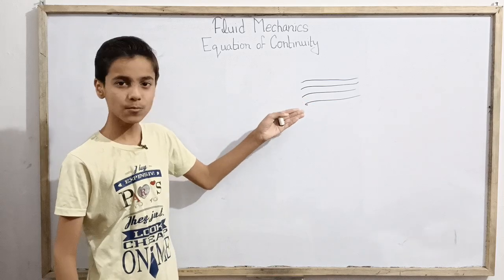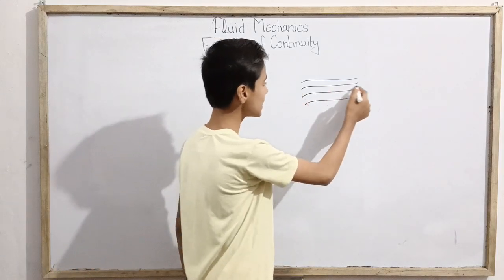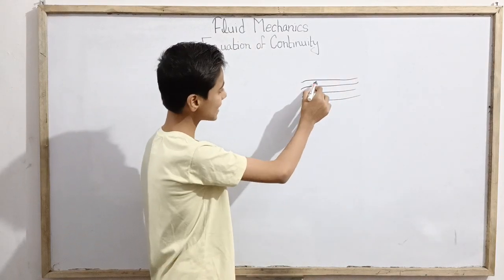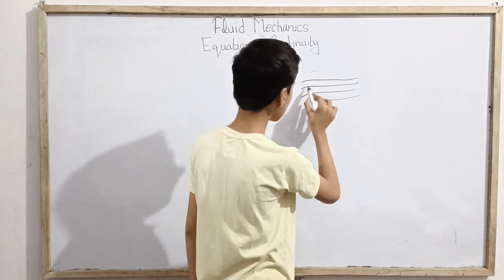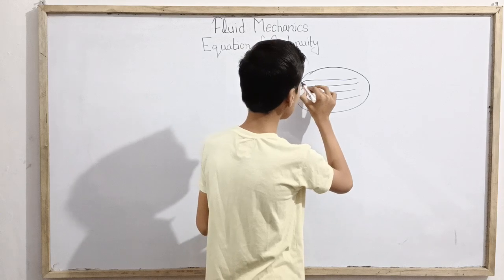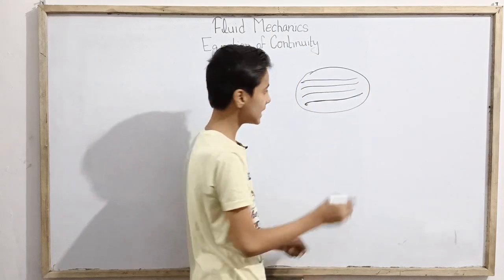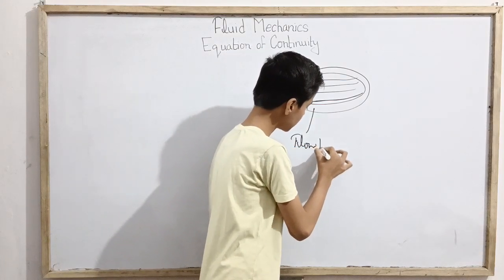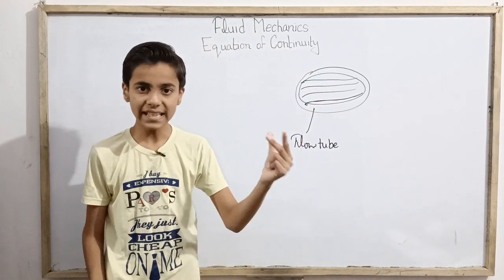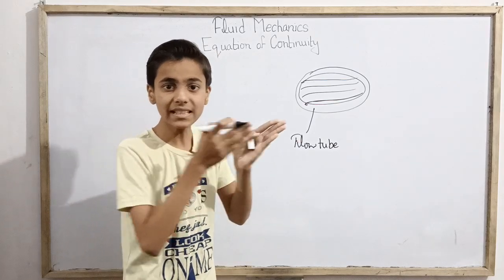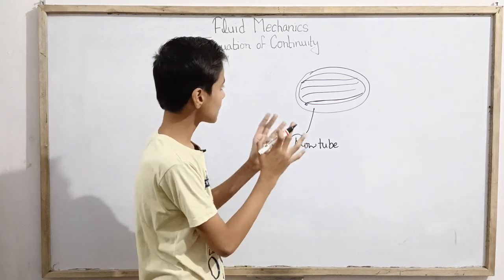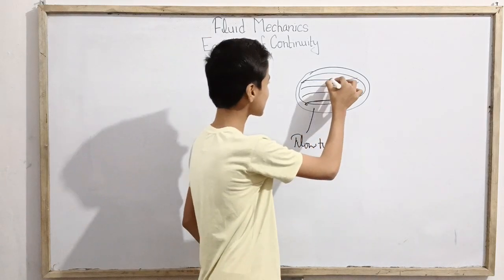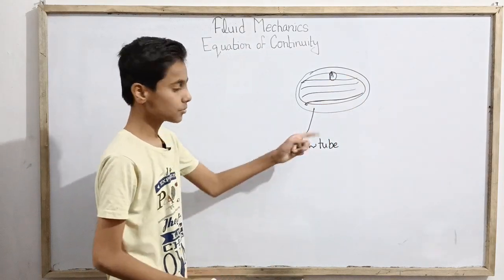When fluid flows, many streamlines and flow lines form. All these elements are flowing along flow lines. When they are connected to a particular area, we can consider the whole area as an imaginary tube, and we call this a flow tube. This is not a real tube, but we assume this area — that is what we call the flow tube.